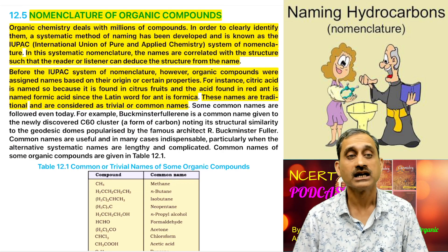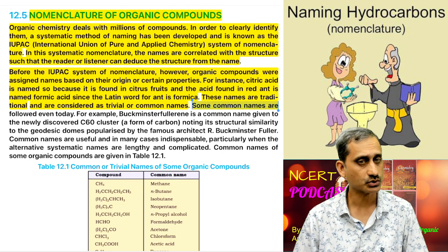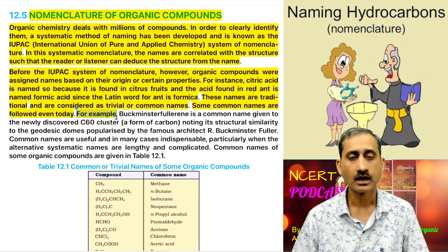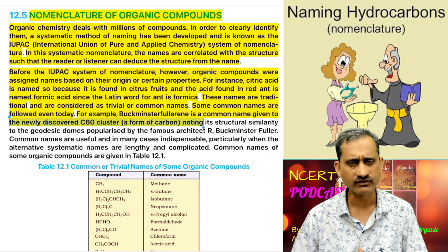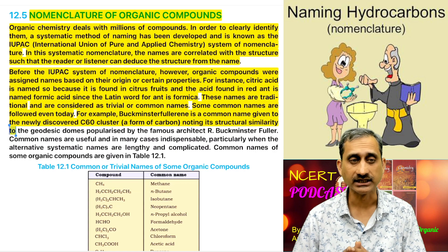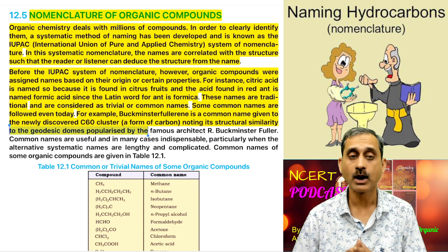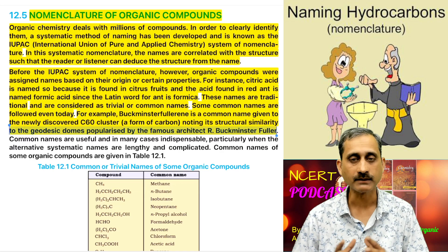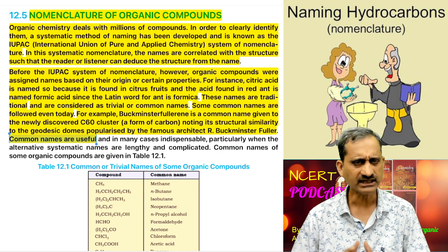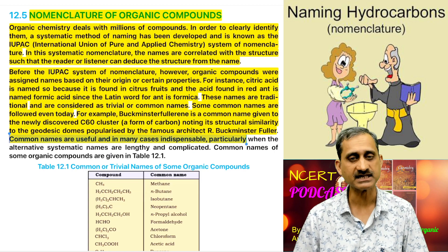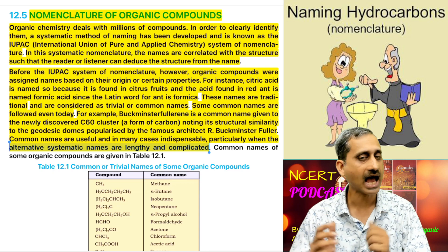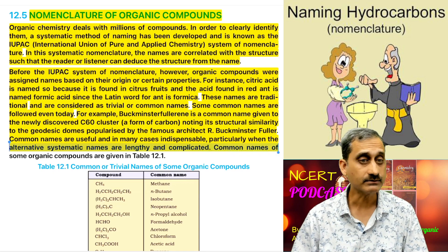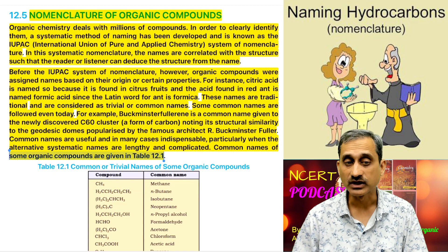Some common names are followed even today. For example, Buckminster Fullerene is a common name given to the newly discovered C60 cluster, a form of carbon, noting its structural similarity to the geodesic domes popularized by the famous architect R. Buckminster Fuller. Common names are useful and in many cases indispensable, particularly when the alternative systematic names are lengthy and complicated. Common names of some organic compounds are given in Table 12.1.